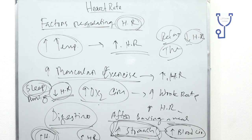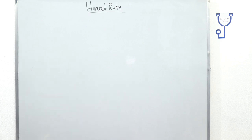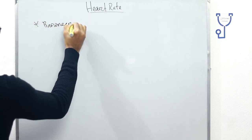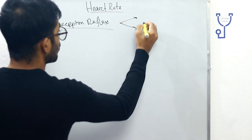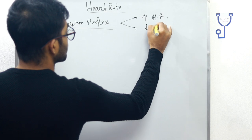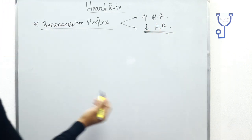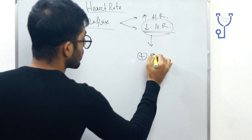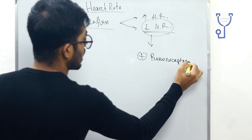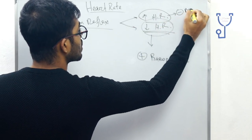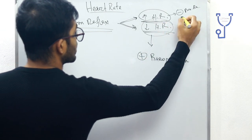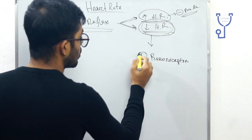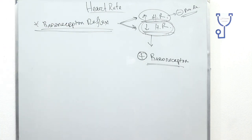Now we will discuss about the reflexes: baroreceptor reflex, chemoreceptor reflex, Bain-Bridge reflex, and Cushing reflex. In case of the baroreceptor reflex, it works in two ways — sometimes it increases heart rate and sometimes it decreases heart rate. Heart rate decreases when baroreceptors are stimulated, and heart rate increases when baroreceptors are inhibited.